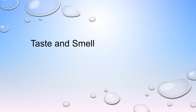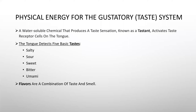For this lecture, we are going to discuss taste and smell. The physical energy for the gustatory or taste system are tastants, which are water-soluble chemicals that produce a taste sensation. The receptor cells are on the tongue, and they pick up tastes such as salty, sour, sweet, bitter, and umami. Flavors are a combination of taste and smell.